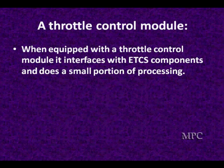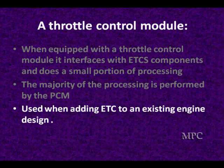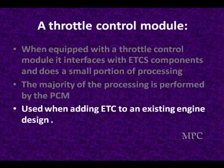When equipped with a separate electronic throttle module, it's going to interface the electronic throttle control system components and do a small amount of processing. The majority of the processing is still performed by the PCM — meaning how much throttle opening do we need. It communicates that to the external module and then the external module executes that command. The external throttle control module is used when adding ETC to an existing engine design without rebuilding from the ground up — you just add something to it and modify some things to have minimum impact on the software, wiring harness, and other elements.